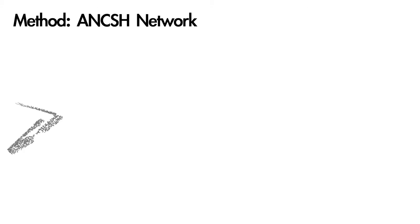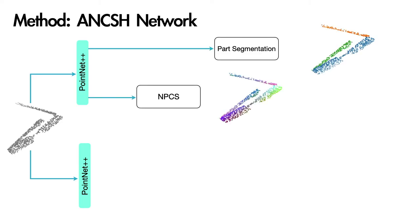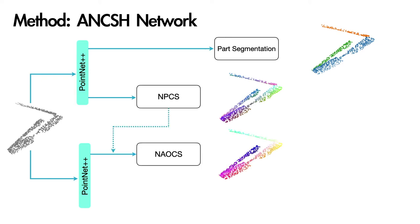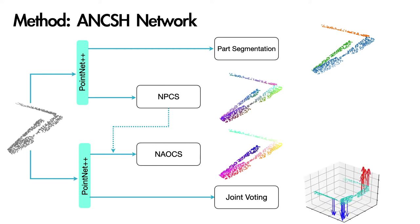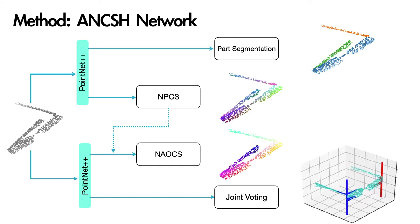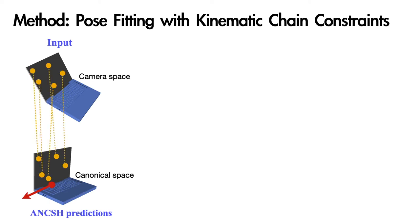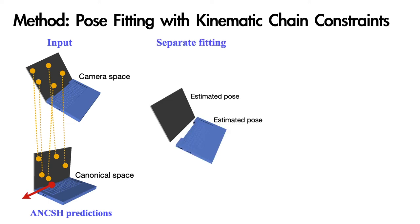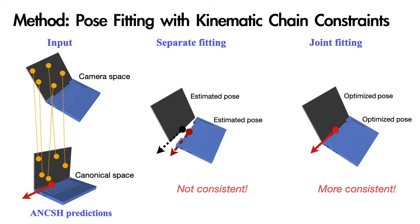To learn the ANCHE representation, we leverage a PointNet++-based neural network. It jointly predicts part segmentation, dense coordinate predictions in each NPCS, transformations from each NPCS to NOX, and joint parameters in NOX. To infer axis orientations and pivot locations, our novel joint prediction head performs a voting-based regression. Given the dense 3D correspondence between depth point cloud and ANCHE predictions, we perform part-pose fitting using RANSAC. However, separately fitting each part pose could easily violate joint constraints, like the laptop base and screen may not align well on the hinge. To solve this, we add an energy term for each predicted joint to enforce kinematic chain constraints and then optimize part poses jointly.